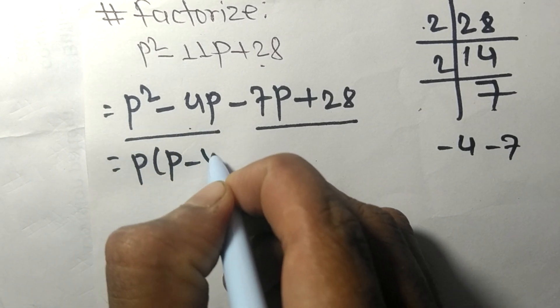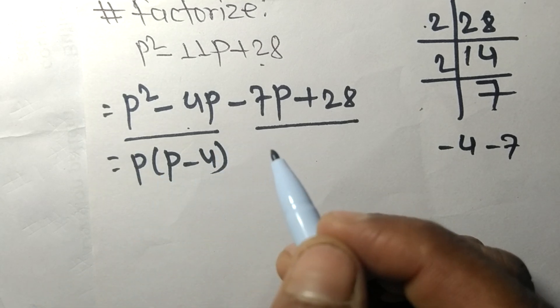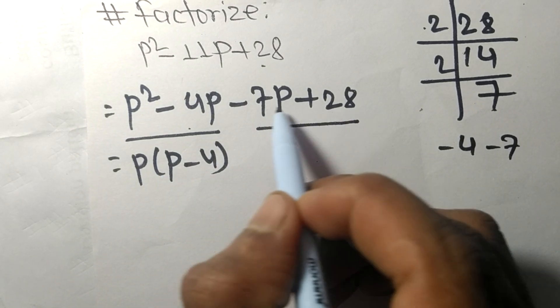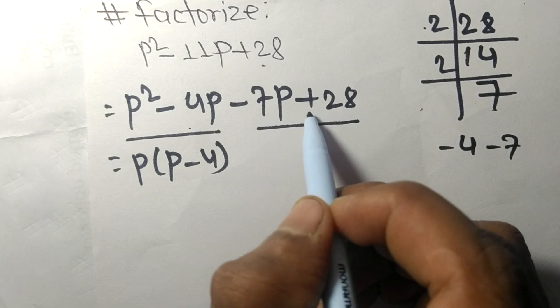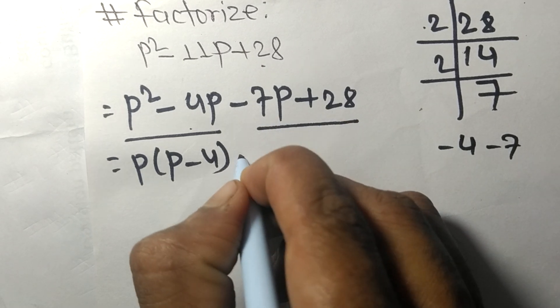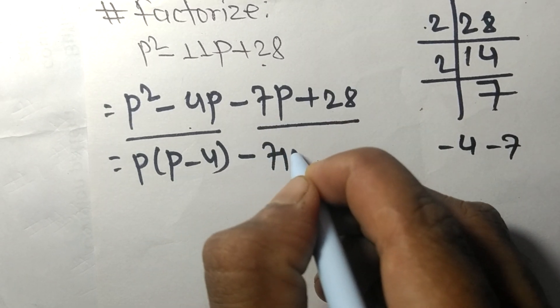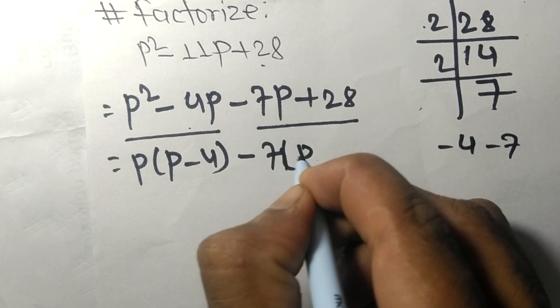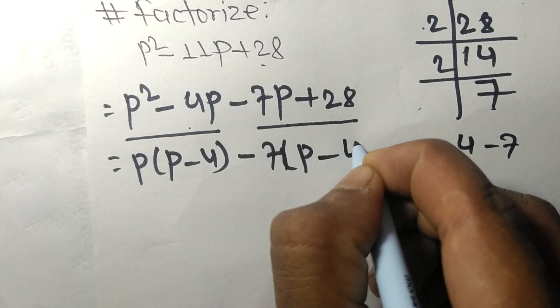Similarly, we find the common in the last two terms. The common factor is minus 7, so the remainder is P minus 4. 7 times 4 equals 28.